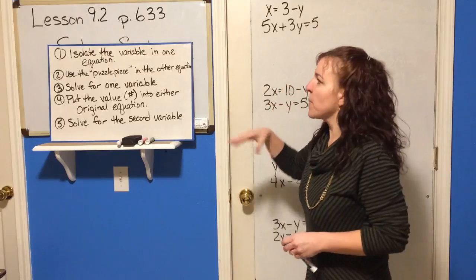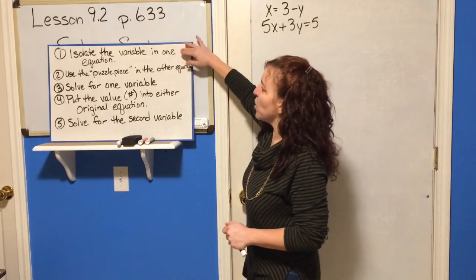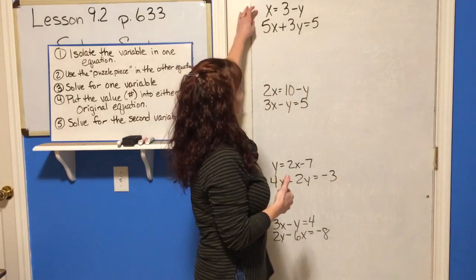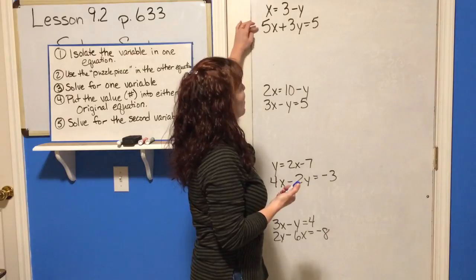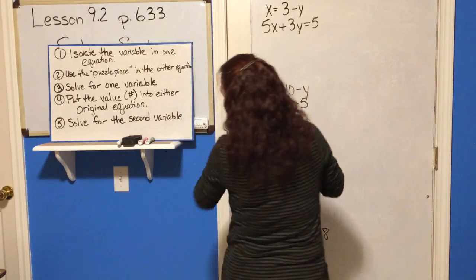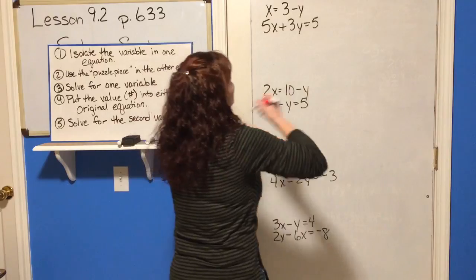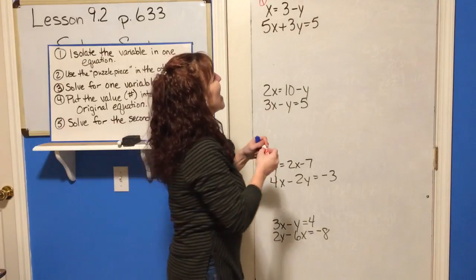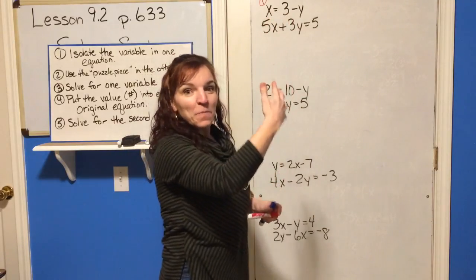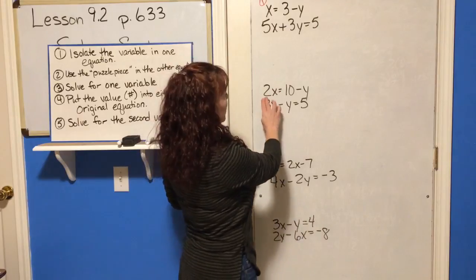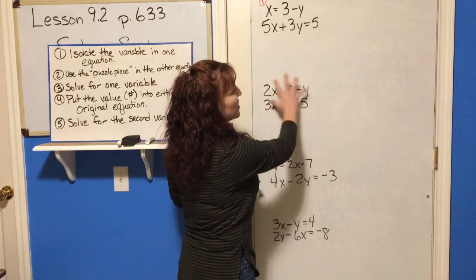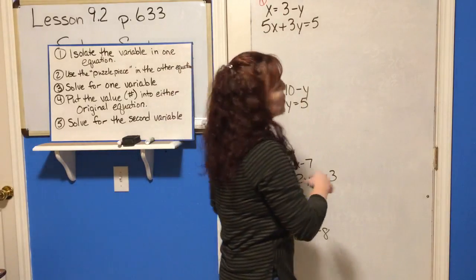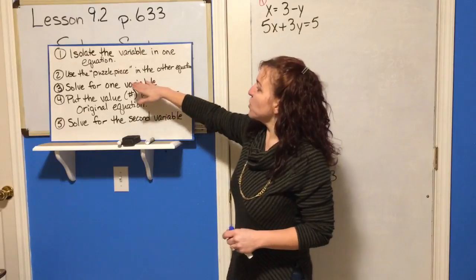Step one says to isolate the variable in one of the equations. In this system, x equals 3 minus y and 5x plus 3y equals 5. This equation already has that step done because x is by itself — it's isolated. On the other equation you've got a 2x, so we'll have to do something to isolate the variable, but on this one that step is done for us.